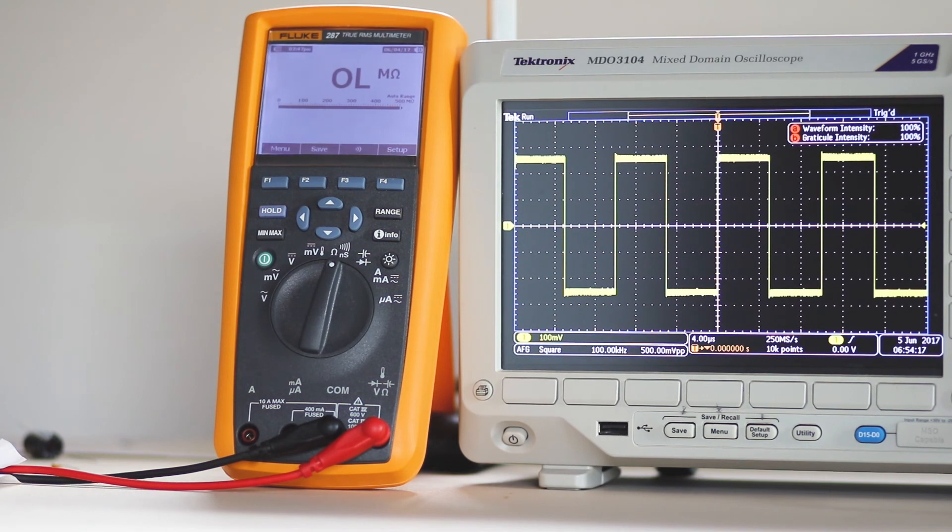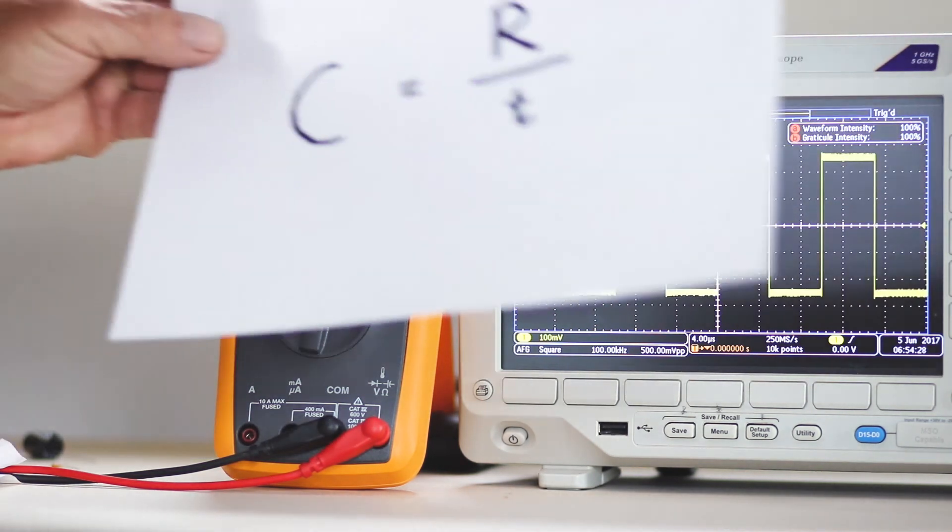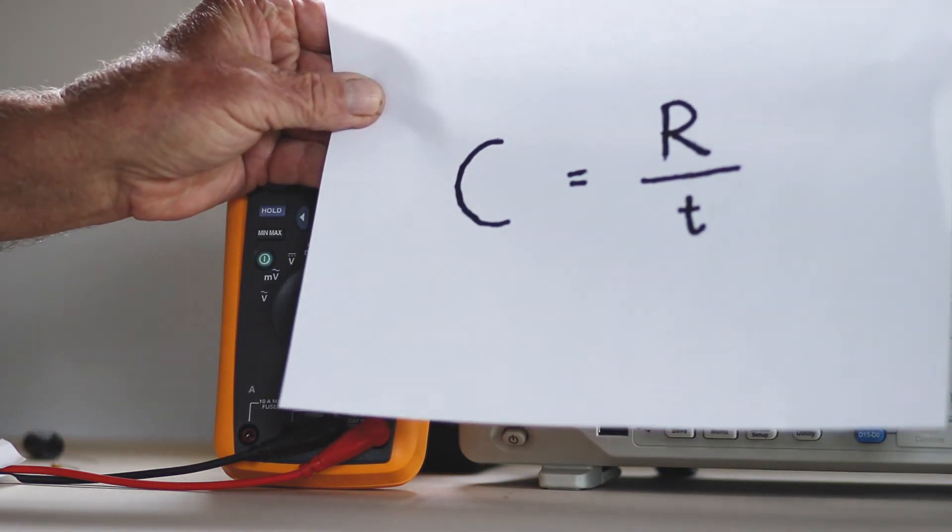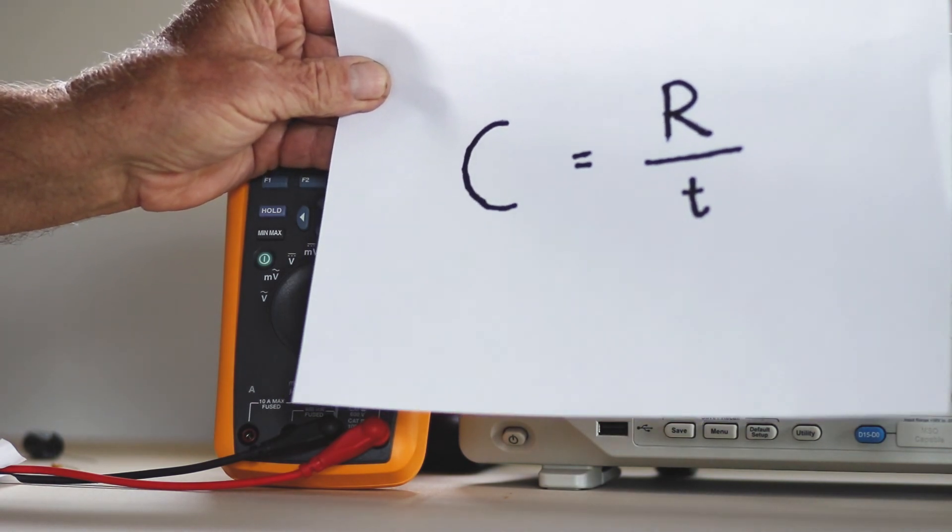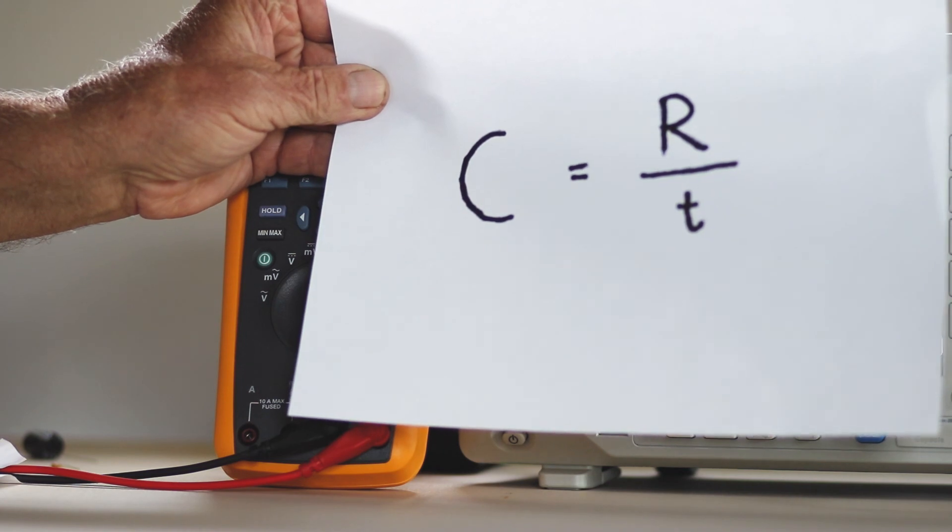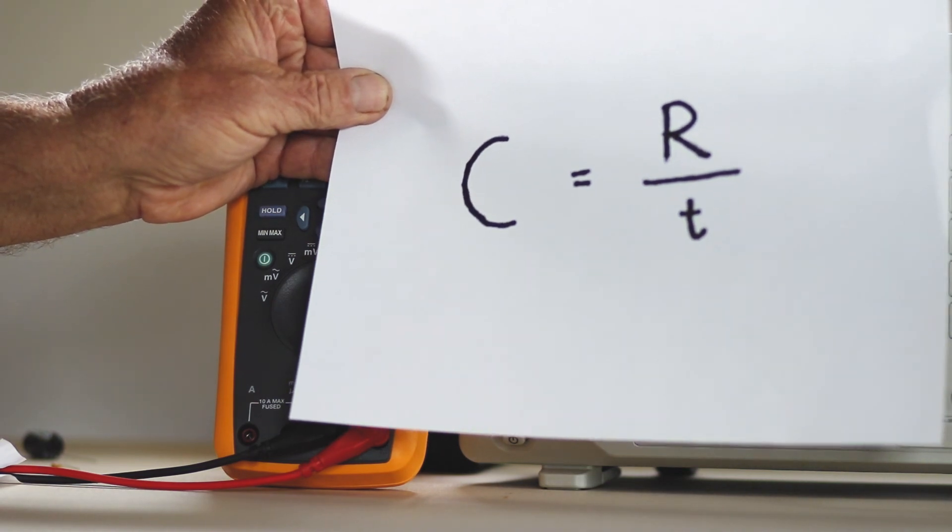Along with the known resistance, the time constant is inserted into the well-known equation, C equals R over T, where C is capacitance, R is the value of the resistor, and T is the elapsed time.